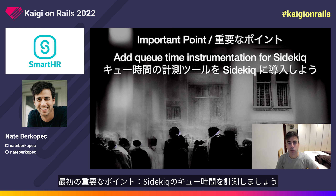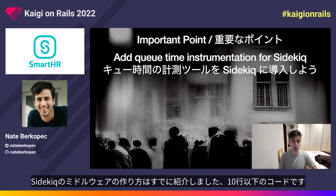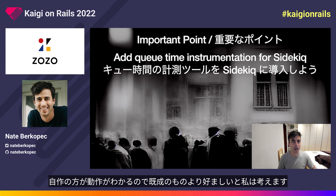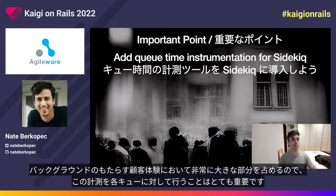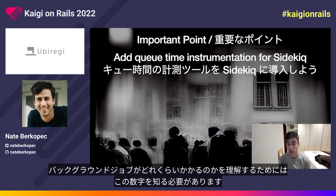Number one action item: instrument queue time in Sidekiq. I've already shown you how to create middleware that will report this — it takes less than 10 lines of code. Your APM might already have instrumentation here, but I prefer to build it myself so I understand how it works. It's just so important to have instrumentation for each queue that you have. This is a huge part of the customer experience of how your background jobs work. You need to know this number to understand the total time of how long it takes to run background jobs.